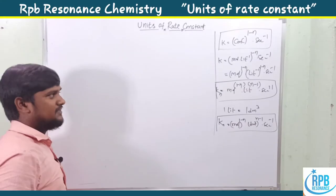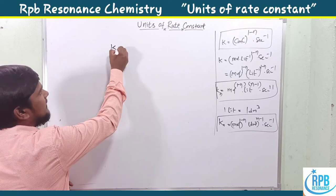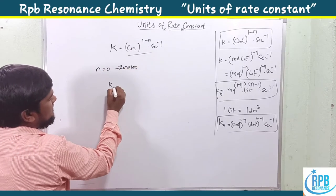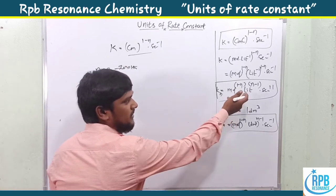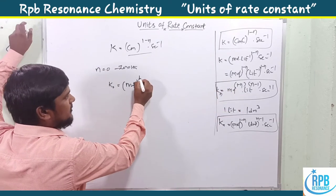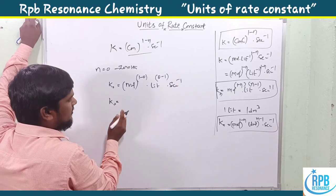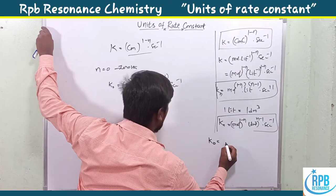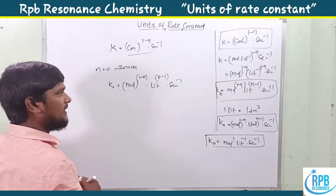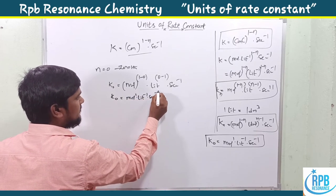With these formulas we can easily find the units. Using K equals concentration to the power one minus n times second inverse: if n equals zero, that is zeroth order, then K₀ equals concentration to the power one into one minus zero, which is concentration to the power one. Substituting: K₀ equals mole to the power one times liter to the power minus one times second inverse. That is the zeroth order rate constant units.